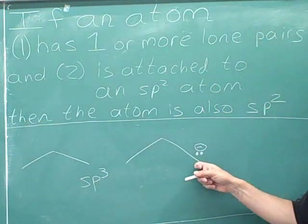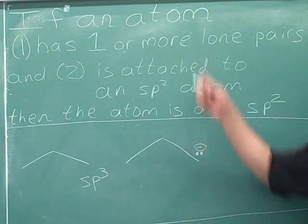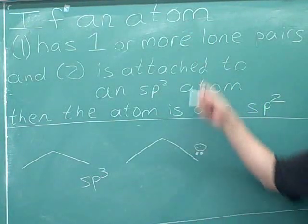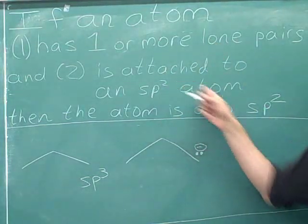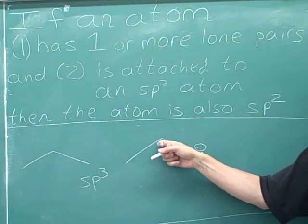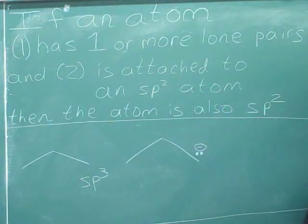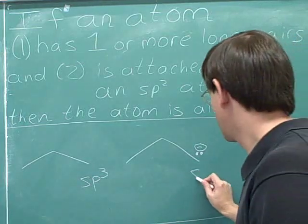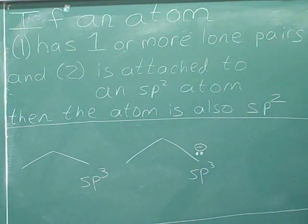What is the hybridization of this carbon? The exception does not apply to this carbon. This carbon does have a lone pair, but it's not attached to an sp2 atom — this atom up here is sp3. So we don't have the second condition here. This is simply a normal sp3 atom, as determined by the basic rule for hybridization.